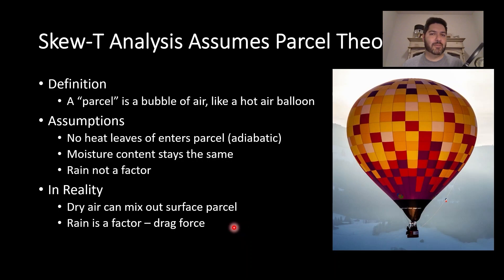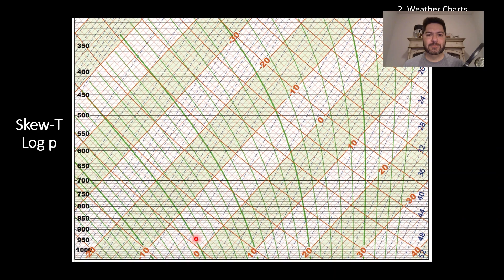Sometimes CAPE is an overestimate, particularly in situations where you do have drier air above the surface. CAPE, by the way, meaning convective available potential energy, or just a measure of how strong an updraft in a storm might be. Also, rain is a factor in real life and produces a kind of drag force. These are not included in parcel theory, so something to keep in mind.